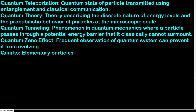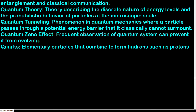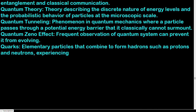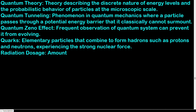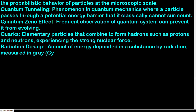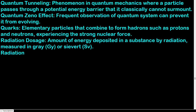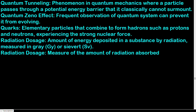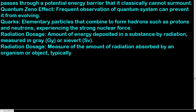Quarks: elementary particles that combine to form hadrons such as protons and neutrons, experiencing the strong nuclear force. Radiation dosage: measure of the amount of radiation absorbed by an organism or object, typically measured in gray (Gy) or sievert (Sv). Radiation shielding: material or barrier used to absorb or block radiation, reducing exposure to humans and the environment. Radio astronomy: branch of astronomy dealing with the study of celestial objects at radio frequencies. Radio waves: electromagnetic waves with frequencies ranging from about 30 Hz to 300 GHz.